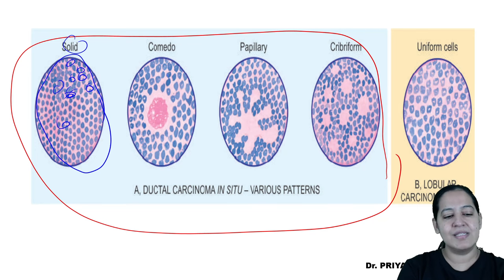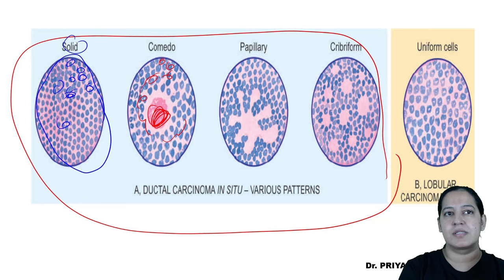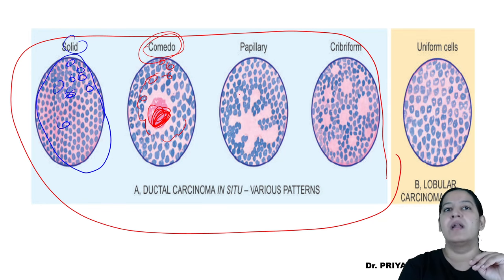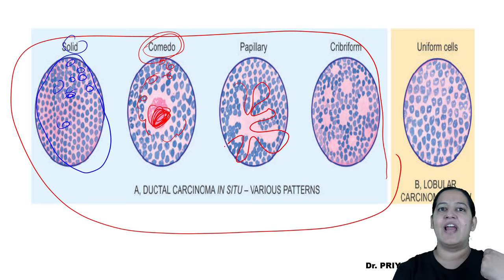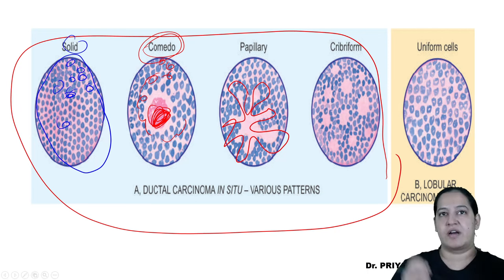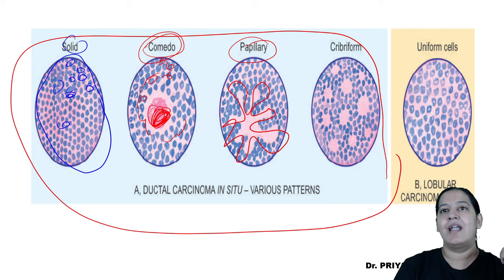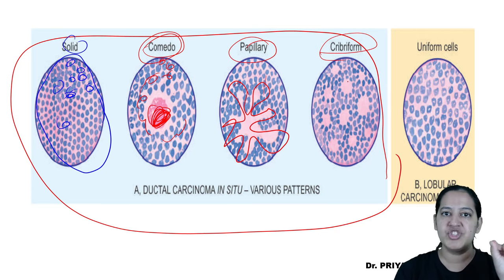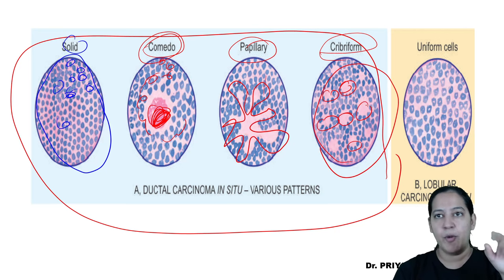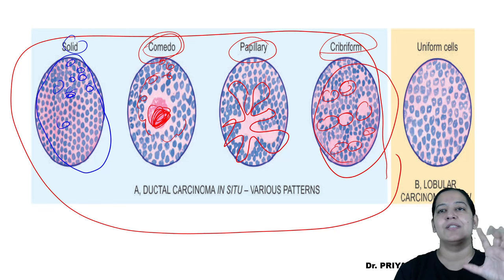In the second pattern, tumor cells are present at the periphery and at the center there is necrosis — no tumor cells at the center. This is known as comedo pattern. The third is papillary — tumor cells are arranged in the form of finger-like projections coming towards the lumen of the duct. The last is cribriform — the word cribriform means a sieve. Tumor fills the cavity of the duct forming small holes or spaces in between.